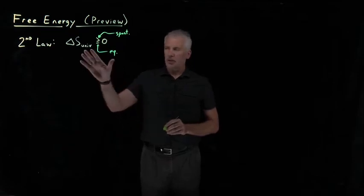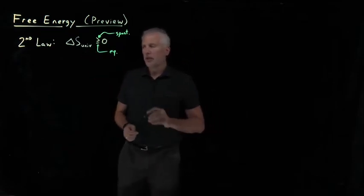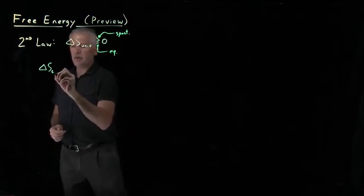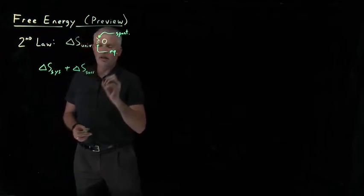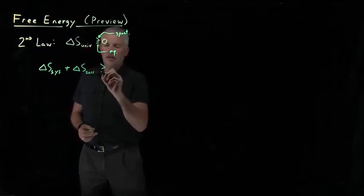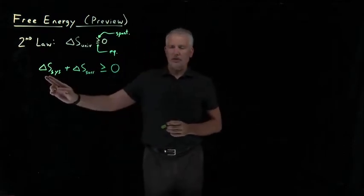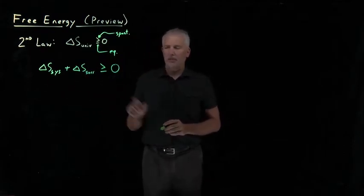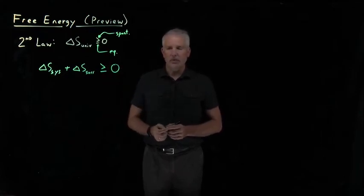This is true and useful under some circumstances, but it's not as useful as it could be. If I think of the universe as being composed of the system and the surroundings, I can rewrite the second law to say the sum of the entropy change of the system and the entropy change of the surroundings must be either positive for a spontaneous process, or equal to zero if the process is in equilibrium.